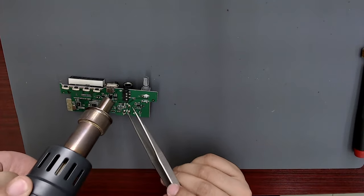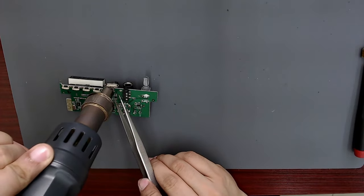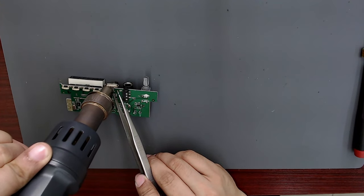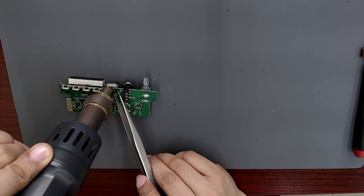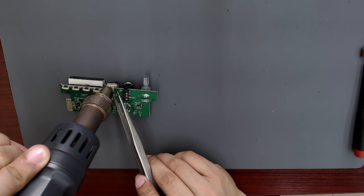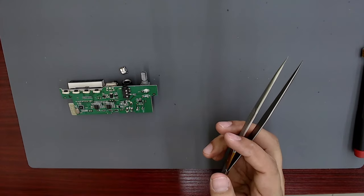With the hot air station, I heat the board and with tweezers, I push the charging port gently to separate it from the board. For a board like this, I usually set the hot air station to 360 degrees Celsius. When the solder melts, the connector will come out easily.